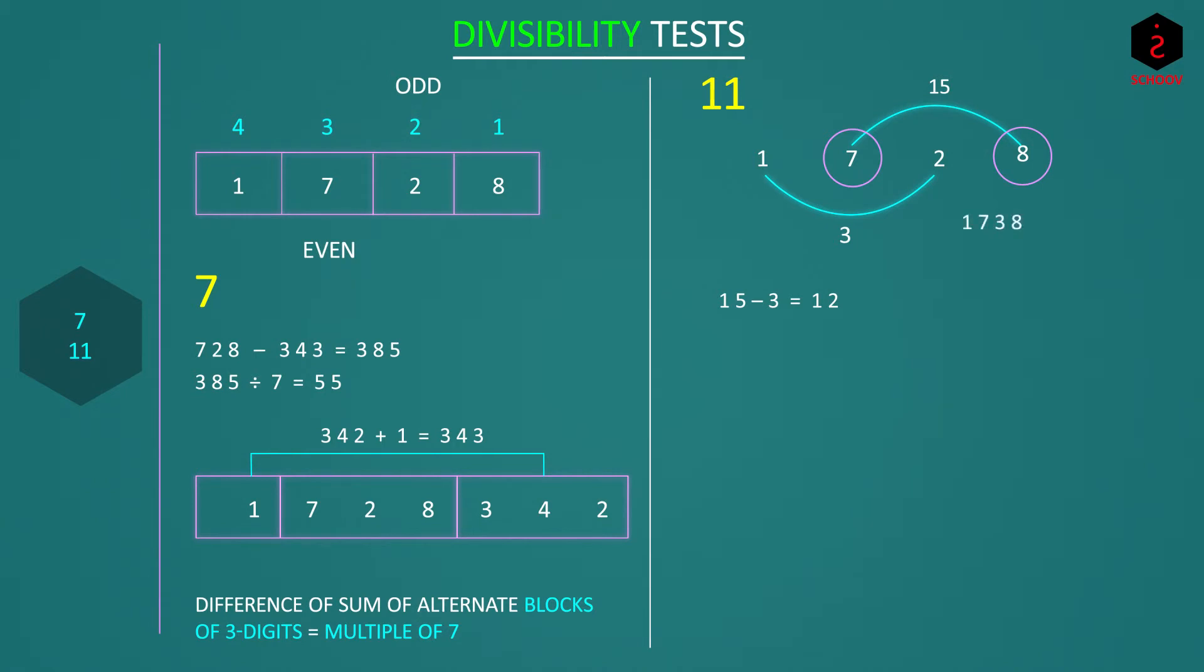So we consider 1738 or 2728. Sum of numbers at even places is 3 plus 1, which is 4, or 2 plus 2, which is 4. And hence the difference becomes 15 minus 4, which is 11. So the test for 11 is, difference of sum at even and odd places is either 11 or 0.